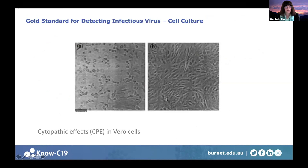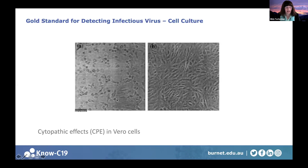The gold standard for detecting infectious virus is cell culture. This involves a monolayer of epithelial cells derived from the kidney of an African green monkey. Samples are added to these cells, and if there is virus in the sample, it will enter the cells, reproduce, and kill them. What you see is a characteristic cytopathic effect mediated by the virus.